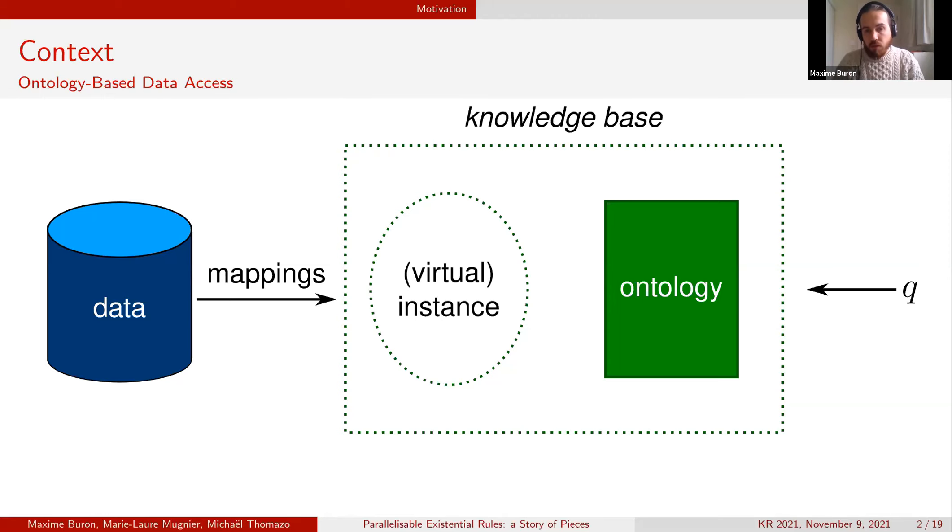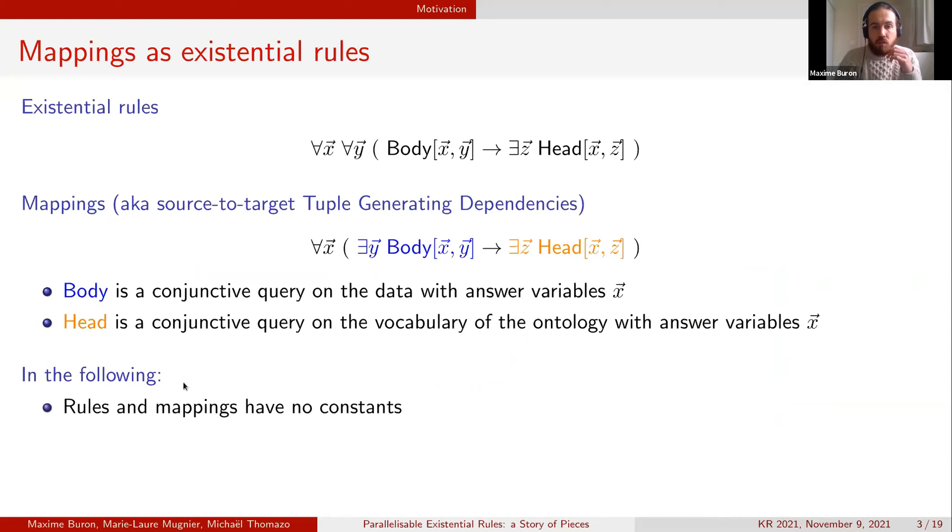The instances are generated from the data through the mappings. In these settings we want to consider the mappings and the ontology as existential rules. Existential rules have the following form where the body and the head are conjunction of atoms and the variables that appear only in the head are existentially quantified.